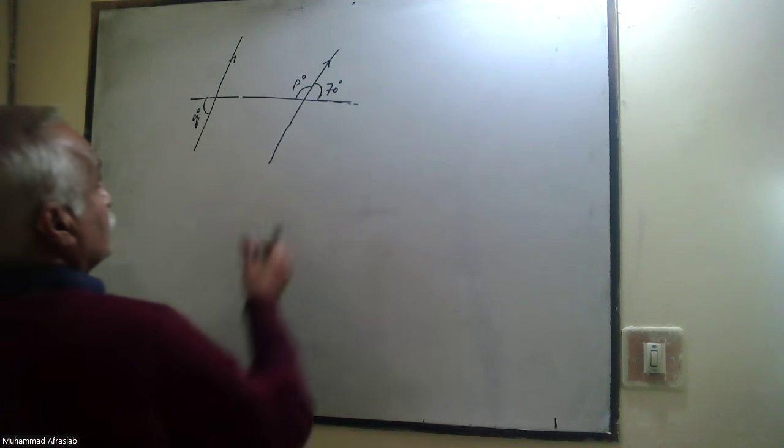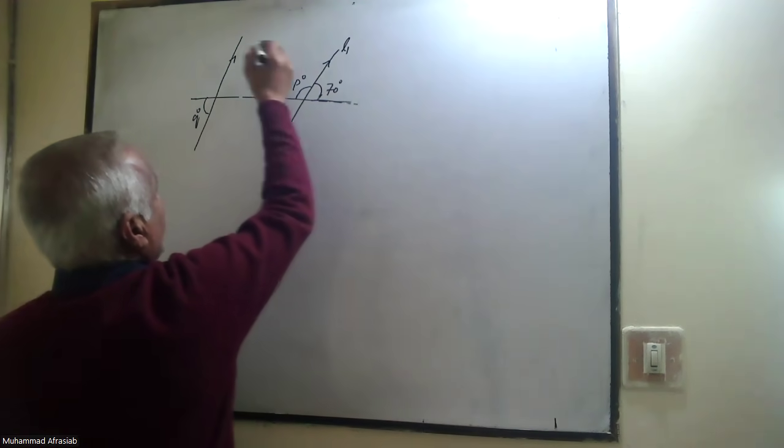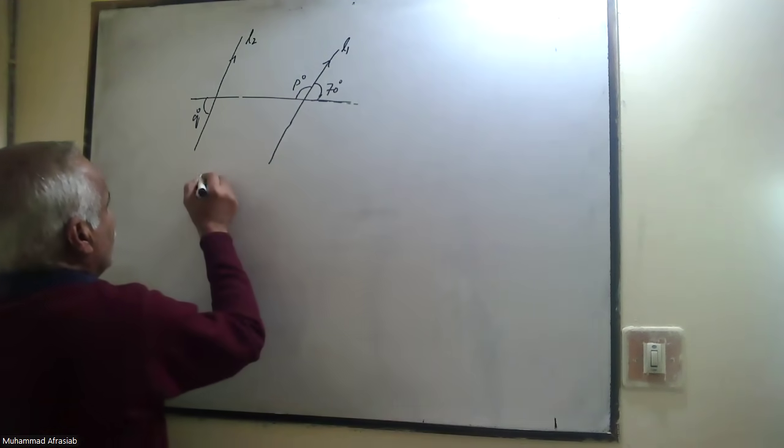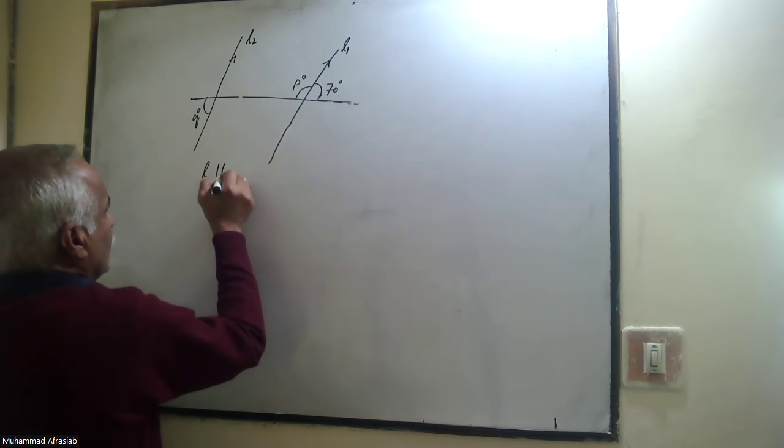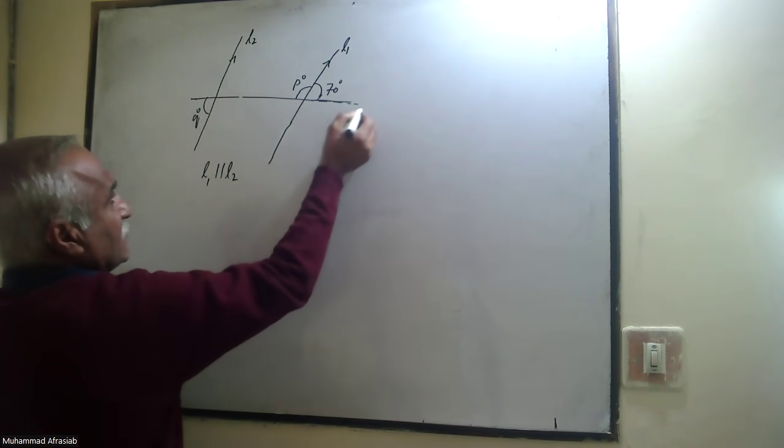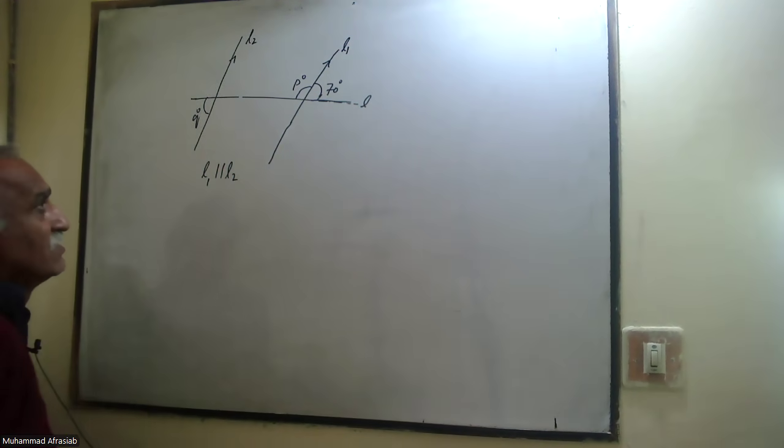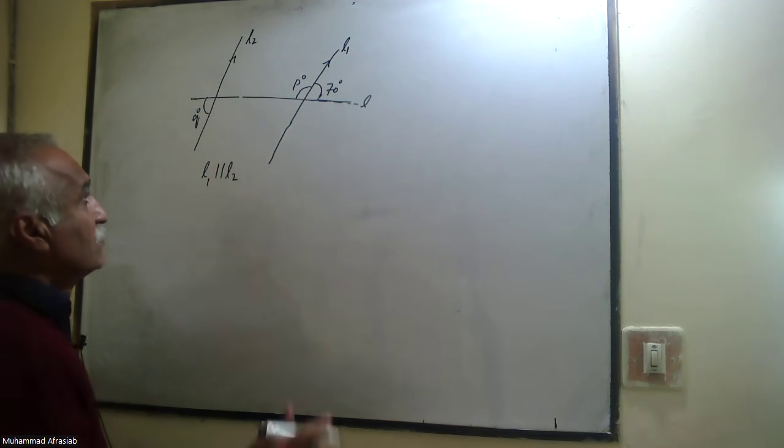There are two lines L1 and L2 which are parallel to each other, and a third line is the transversal. We are going to find out the values of p and q.